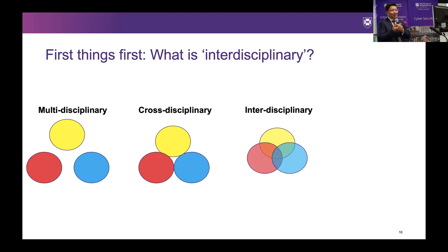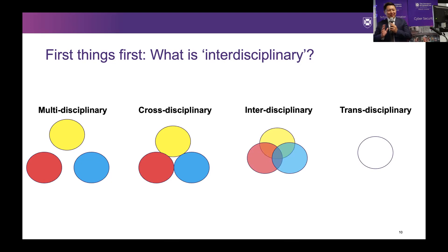The utopian view is transdisciplinary — a total mix, like the ingredients of a cake where sugar, flour, and all those things are mixed together. Many programs around the world, if we're honest, are not transdisciplinary. Maybe we are interdisciplinary at this moment, working towards transdisciplinary. My experience in New Zealand was cross-disciplinary, and then at UQ we moved towards interdisciplinary.